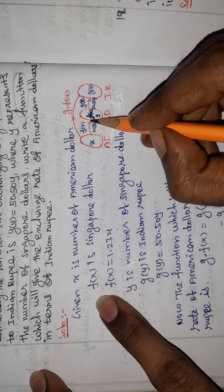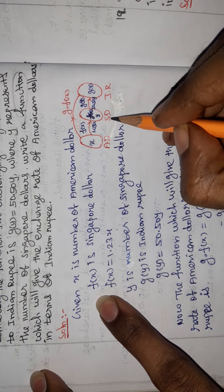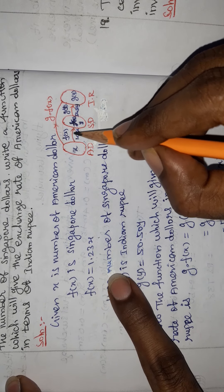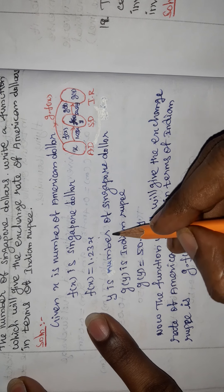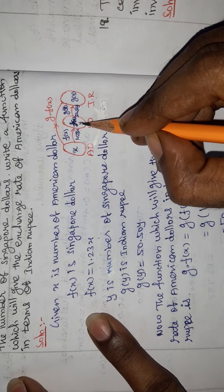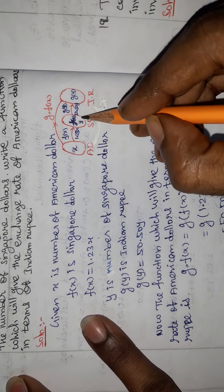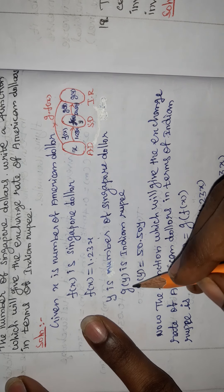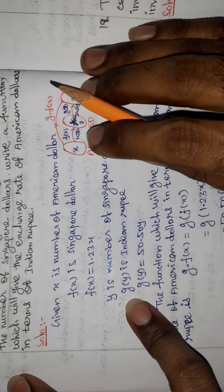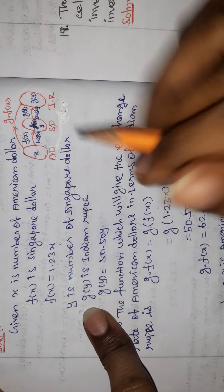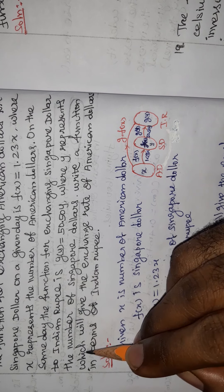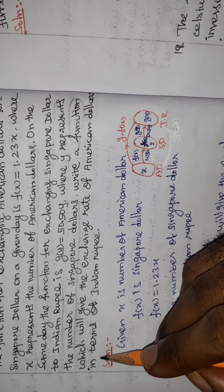X is the number of American dollars. F of X equal to 1.23X, so F of X is the number of Singapore dollars. G of Y equal to 50.50Y, so F of X gives the number of Indian rupees in terms of 50.50Y.